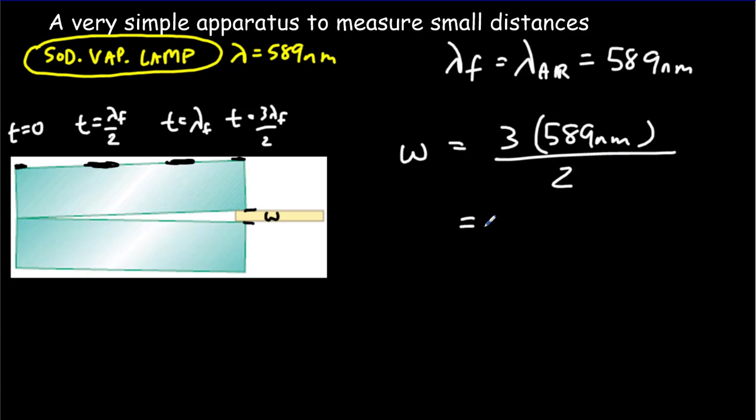Work that out. And you should get 884 nanometers as the width of that little object. So we can use this air wedge to find out the width of objects.